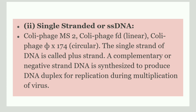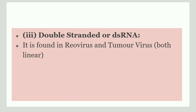Replication occurs during the multiplication of virus. Next is double-stranded RNA, or dsRNA, where the genetic material is double-stranded RNA. Examples include reovirus and tumor viruses.